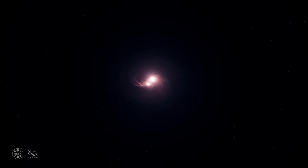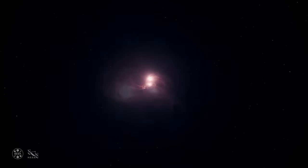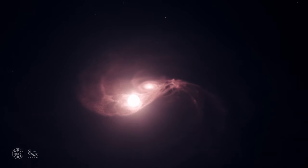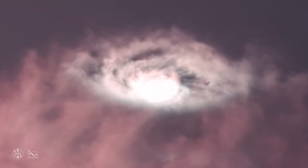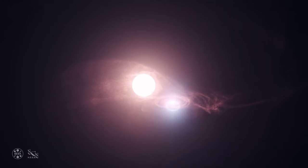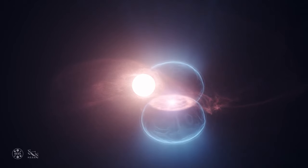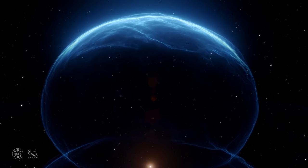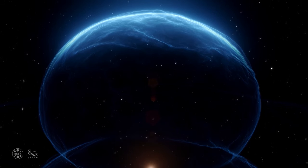A nova is a cataclysmic event that occurs in a binary star system where one star, known as a white dwarf, steals matter from its companion star. Over time, an enormous amount of material accumulates on the surface of the white dwarf. Eventually, this material becomes so dense and hot that a runaway nuclear fusion reaction is triggered, causing a sudden and dramatic increase in brightness. The result is a spectacular explosion of light and energy, illuminating the surrounding space in a mesmerizing display.